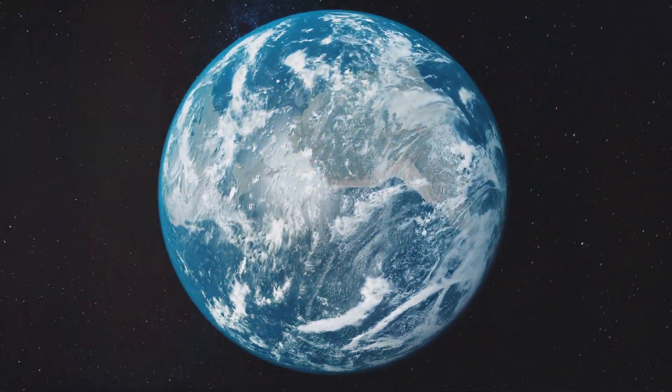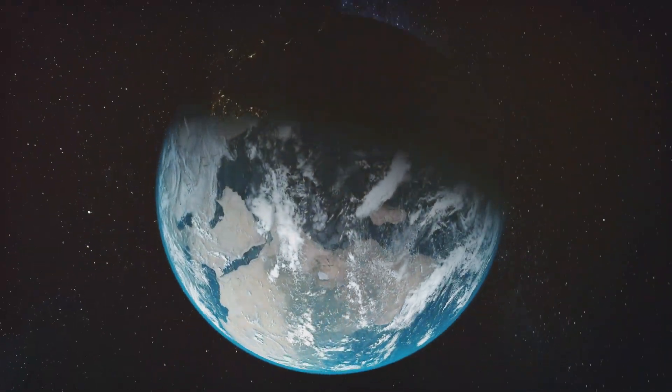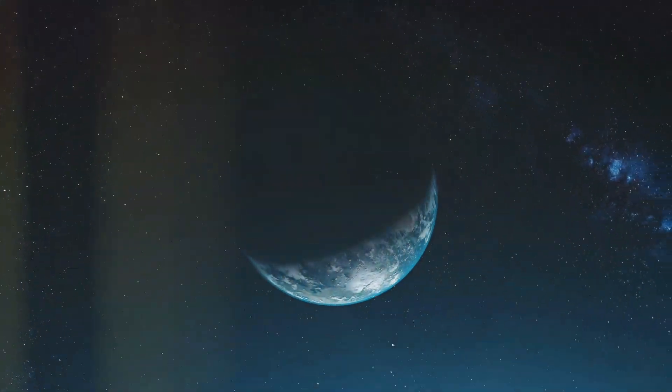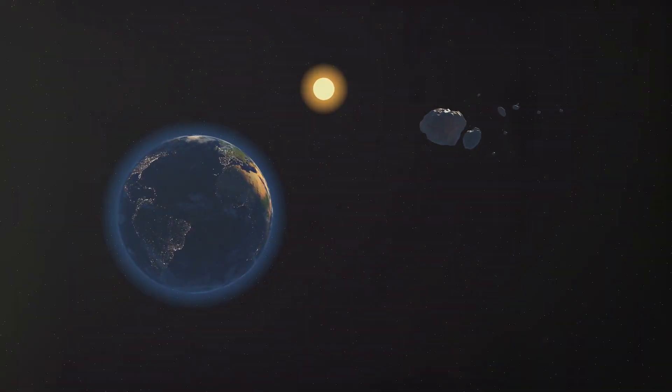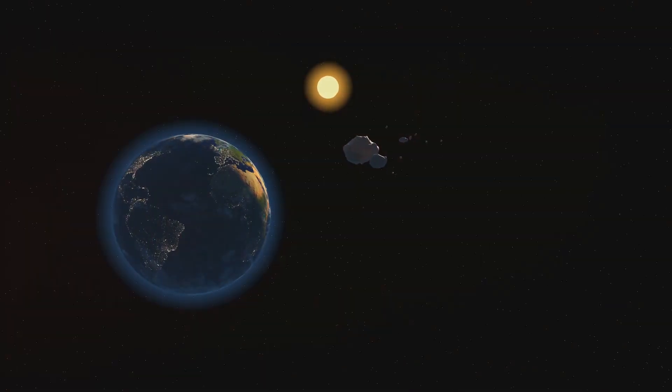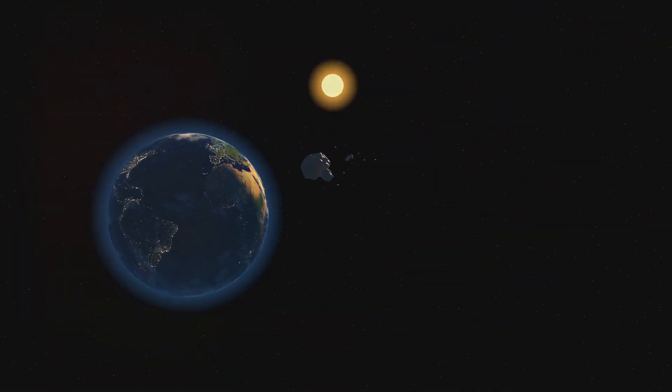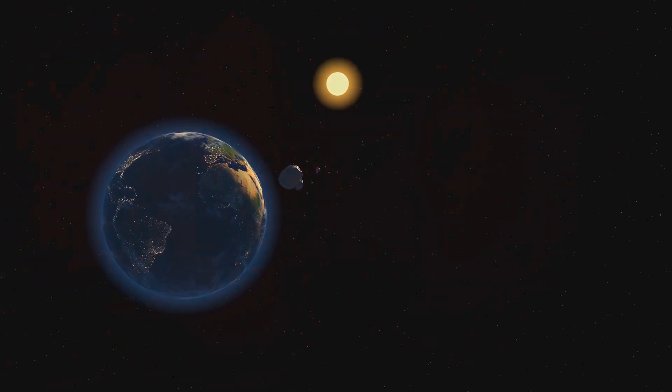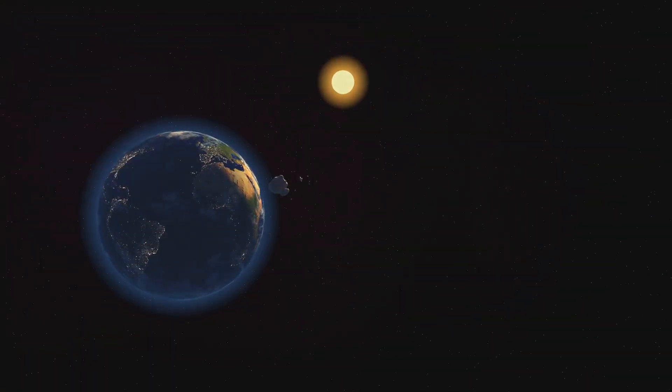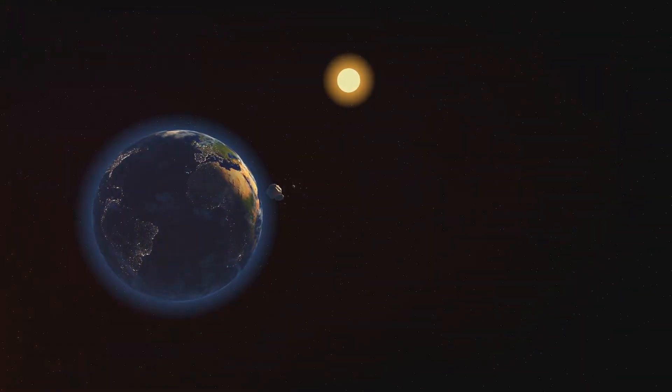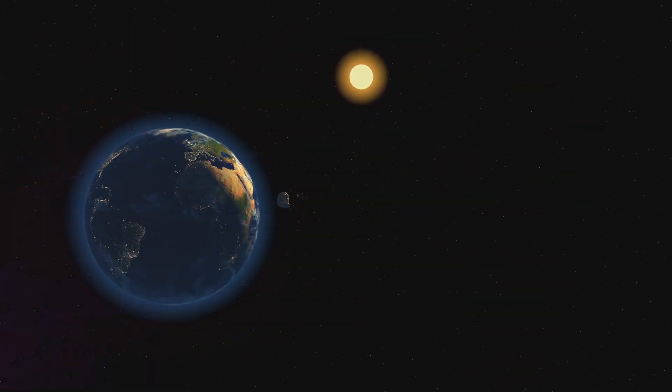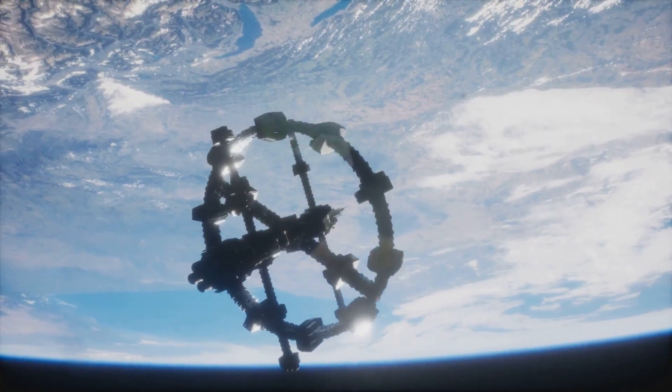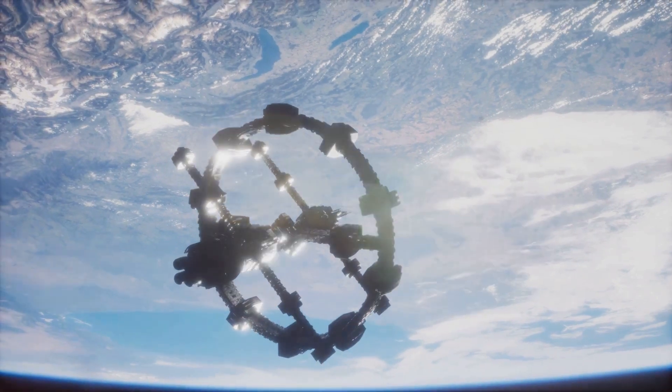The Earth rotates on its axis, an imaginary line that runs from the North Pole to the South Pole. This rotation is responsible for the cycle of day and night. One full rotation takes approximately 24 hours, which is why we experience one day within this time period. The speed at which the Earth rotates is astounding. At the equator, the Earth's surface moves at about 1,670 kilometers per hour or 1,037 miles per hour.